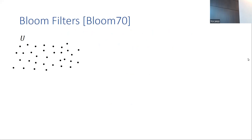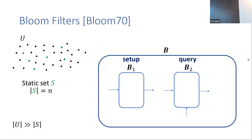Bloom filters are data structures that maintain a compressed representation of a set and support approximate membership queries. More precisely, given a universe of elements and a subset S of elements from this universe, a bloom filter is composed of a setup and a query algorithm. The setup algorithm takes as input the set S and outputs a compressed representation, while the query algorithm takes this representation along with an element and outputs yes or no indicating whether the element belongs to the set.